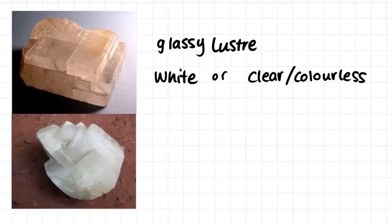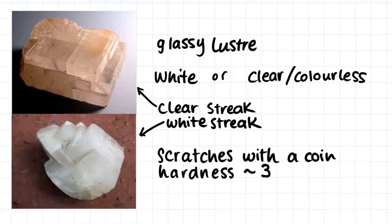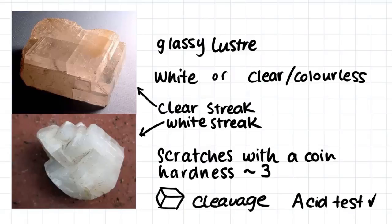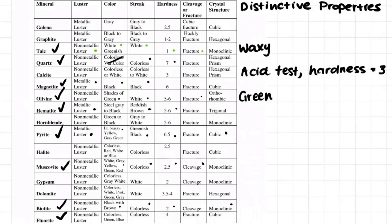Our next sample has a glassy luster and it comes in white or can be clear and colorless. We've been told these two minerals are the same, but one produces a clear streak and one produces a white streak. We do some more tests — we scratch it with a coin and find that it has a hardness of 3. One pretty clear observation is that it has three-dimensional cleavage — that's why it has these cube shapes. So we suspect that maybe it's calcite because of this three-dimensional cleavage, and we do an acid test. When we put the acid on the mineral, it begins to fizz. The acid test, along with the three-directional cleavage, shows us that this rock is calcite. The main things that confirm calcite are the hardness of 3 and the acid test.